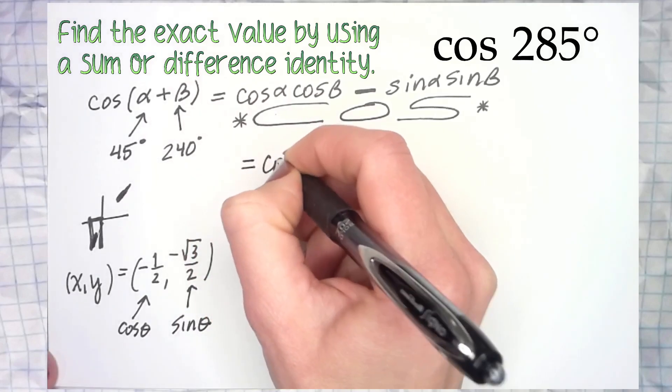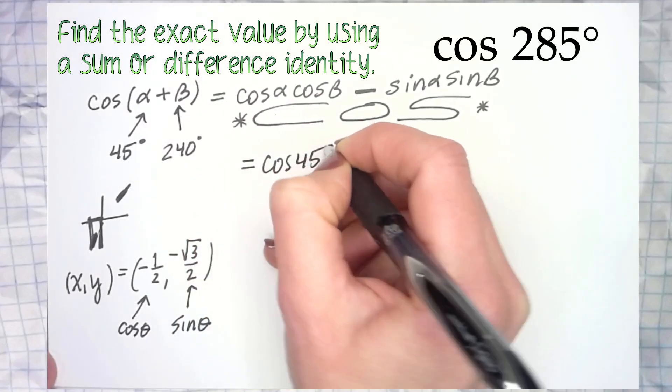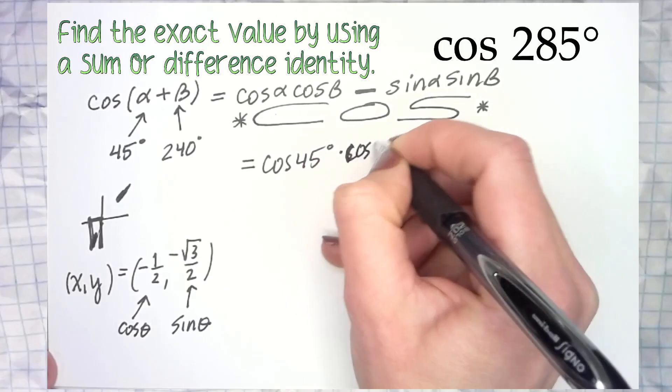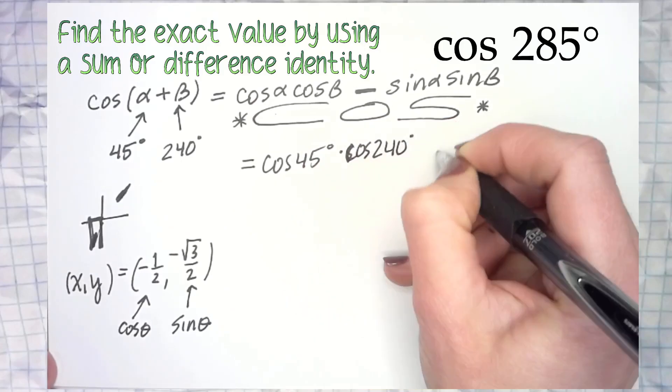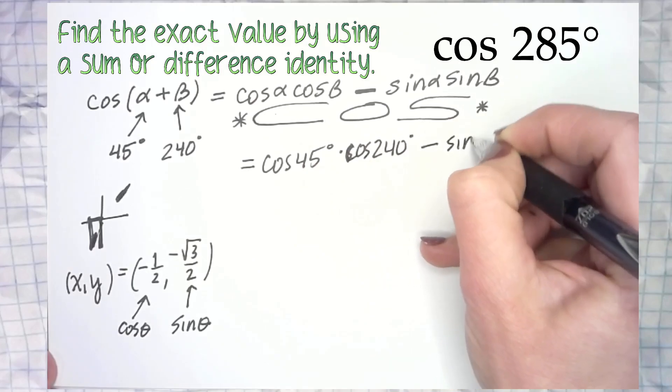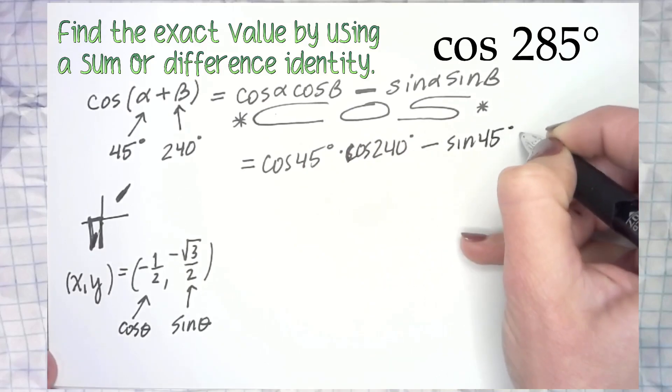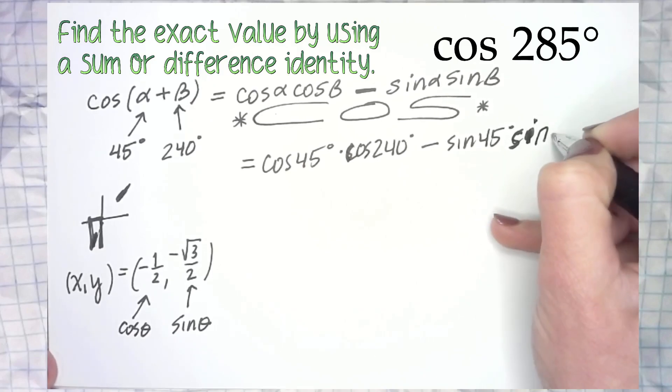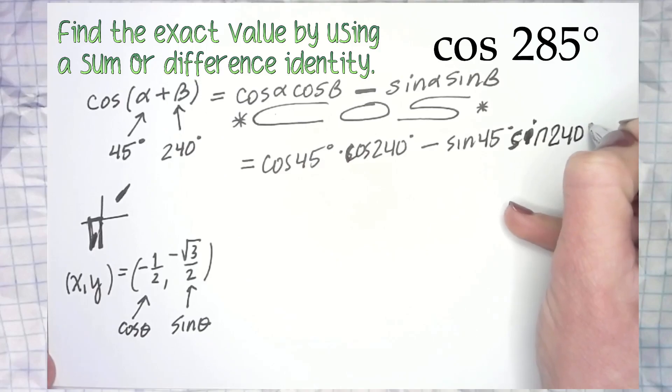So hopefully this is enough for us to keep it moving. Ready? Cosine of 45 degrees times the cosine of 240 degrees minus sine of 45 degrees... oh my gosh, sorry, sine of 240 degrees.